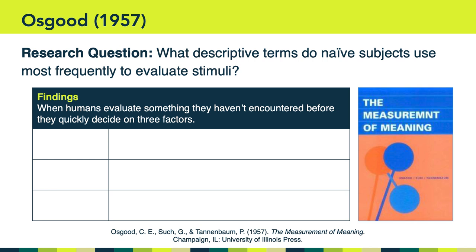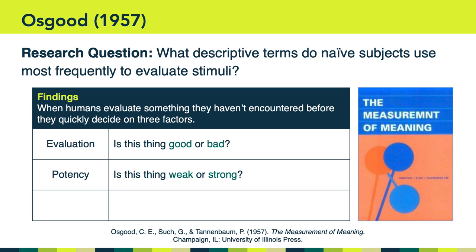The results are absolutely fascinating. They found that when humans evaluate something they've never encountered before, they quickly decide on three factors. The first they called evaluation — is this thing good or bad? The next was potency — is this thing weak or strong? And third, activity — is this thing passive or aggressive? From an evolutionary point of view, if you're out in the wild and you see something you've never seen before, the first things you want to know are: does it look good or bad, is it weak or strong, and is it passive or aggressive?